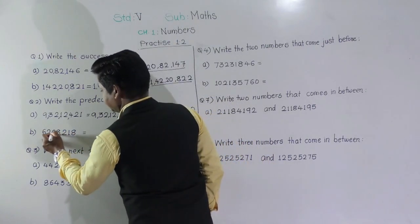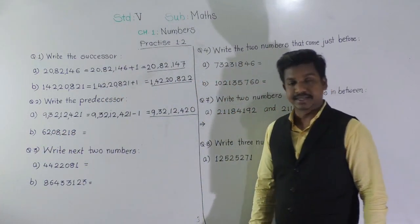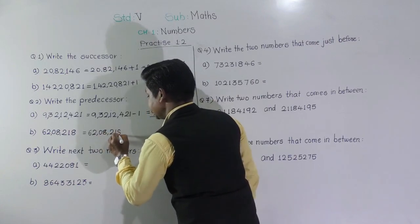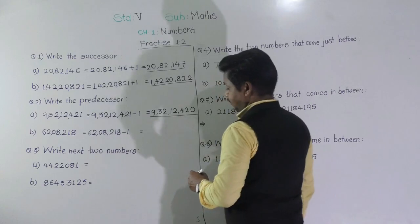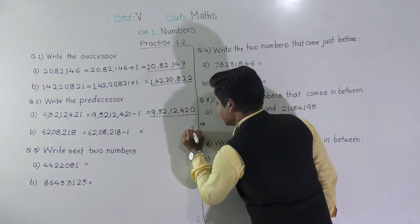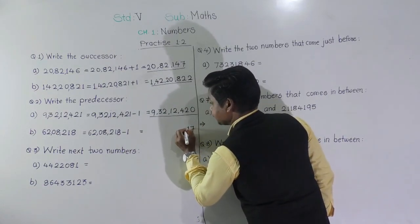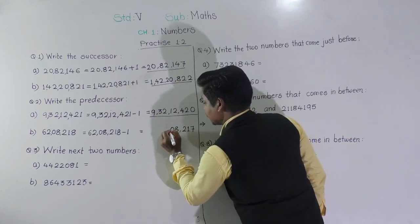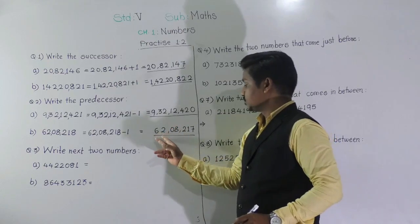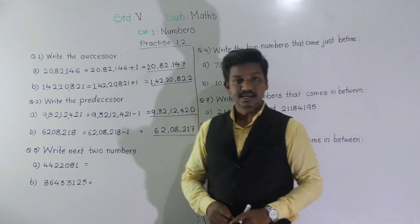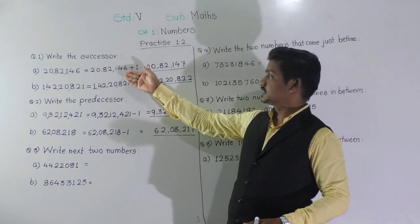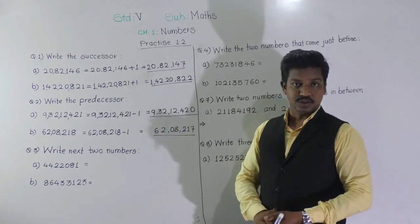Similarly, we will find the predecessor of 62,8,218. To obtain the predecessor, we subtract 1. At the ones place: 8 minus 1 is 7, and all remaining digits stay the same. So the predecessor is 62,8,217. To summarise: when finding the successor, add 1; when finding the predecessor, subtract 1.